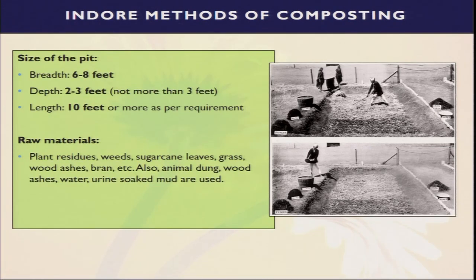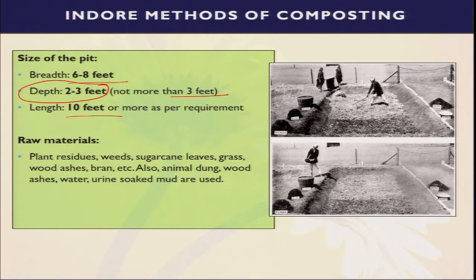For the composting method, we generally make a structure with length of 10 feet or more as per requirement, breadth 6 feet, and depth 2 to 3 feet — not more than 3 feet. Raw materials we can use include plant residues, weeds, sugarcane trash, leaves, grasses, bran, animal dung, wood ash, water, and other things. In filling the compost, first spread the dry waste with cattle dung and soil in a ratio of 4:2:1, and always sprinkle water to ensure enough moisture. This is the Indore method of composting, by which we get good quality compost.